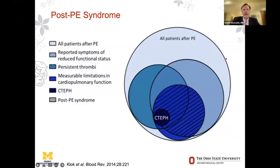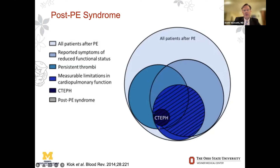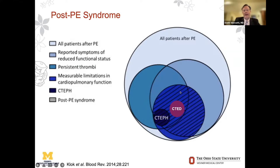The requisite Venn diagram shows all patients after a pulmonary embolism. Well north of 60% report some aspect of reduced functional status. There is overlap with those that do have persistent thrombi — usually identified by ventilation-perfusion scans or pulmonary angiograms. If those patients are studied, we find measurable cardiopulmonary limitations. A subset will have CTEPH. I added CTED to the diagram. There is overlap in post-PE syndrome, but how do we define that subset of the larger group?